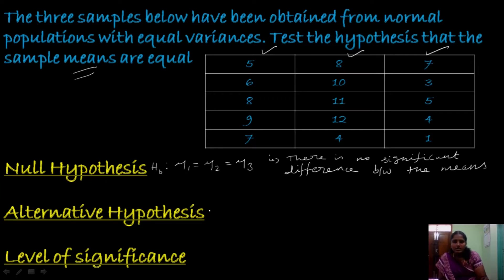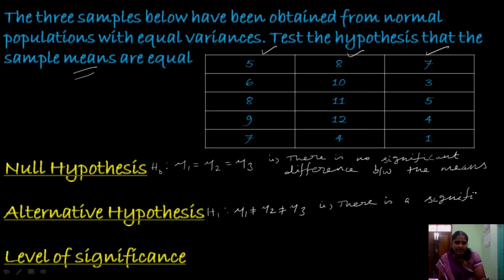Whereas the alternative hypothesis, represented as H1, is mu1 is not equal to mu2 is not equal to mu3. That means there is a significant difference between the means.